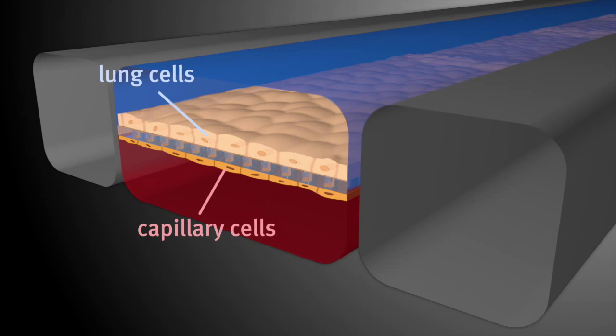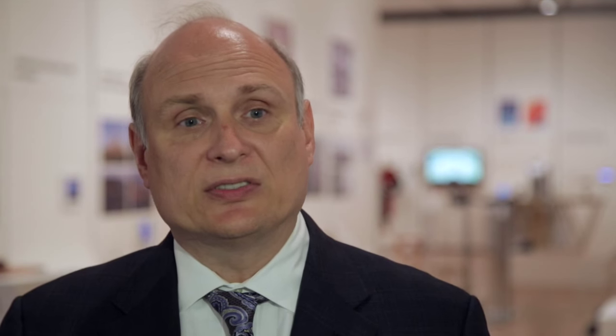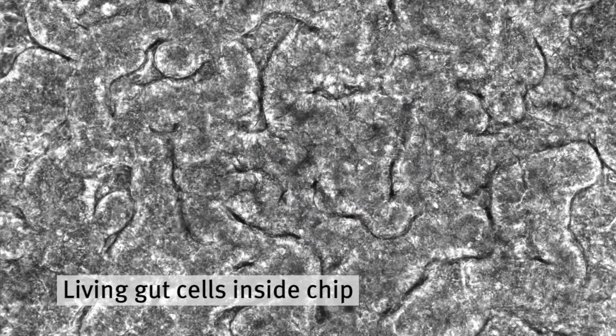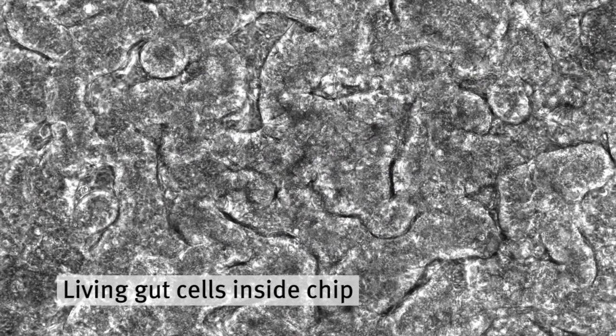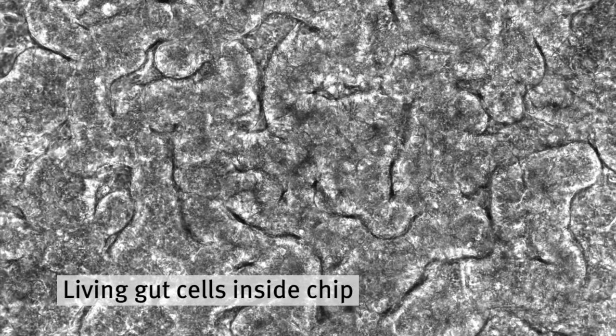We utilize different sources of human cells - they could be cell lines or primary cells. We introduce them into these plastic chips through ports that are incorporated into the channels, and so the chips are seeded with the cells. Once the cells are incorporated into the chip, they start to self-assemble into the different tissue types.